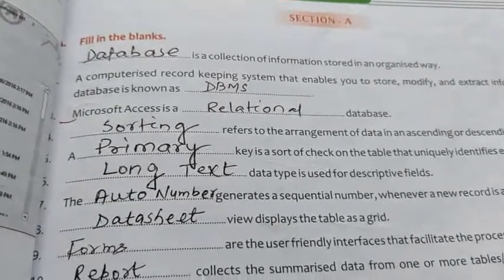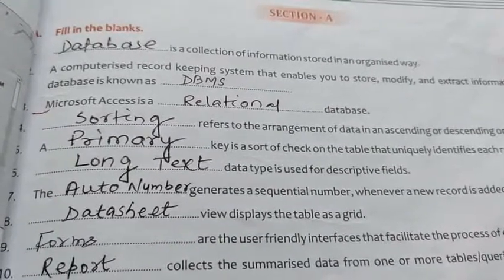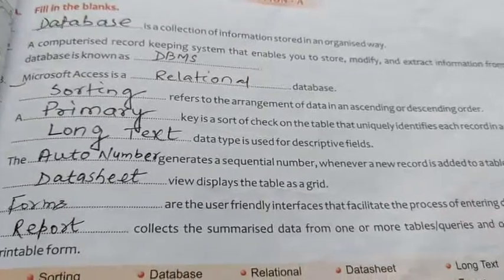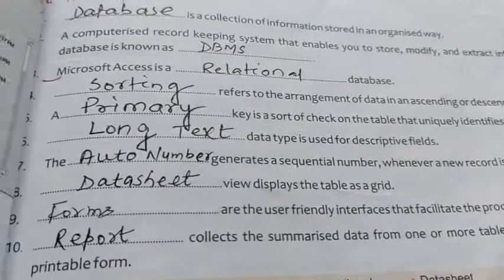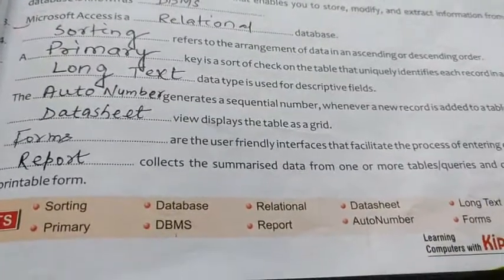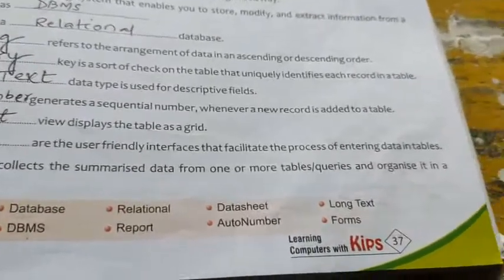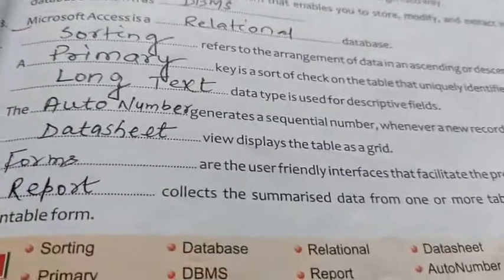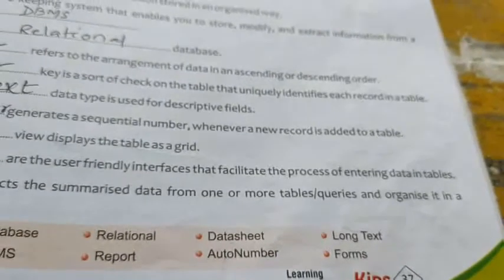The long text data type is used for descriptive panel side and auto number generates a sequential number whenever a new record is added to a table. A datasheet view displays tables in a grid. Forms are used to provide a friendly interface and facilitate the process of entering data in a table. Reports collect and summarize data from one or more tables or queries and organize it in a printable form.